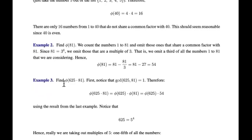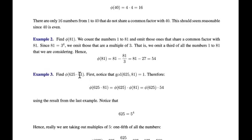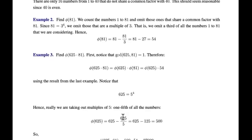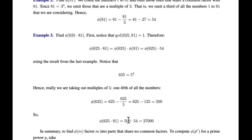Let's look at the Euler phi function of 625 times 81. We recognize that 625 = 5⁴ and 81 = 3⁴. These are relatively prime to each other, so by the Chinese Remainder Theorem splitting, we get φ(625 × 81) = φ(625) times φ(81). We already know φ(81) = 54. For φ(625): we take 625 numbers and remove everything that's a multiple of 5 — that's one fifth of the numbers. So 625 minus 125 = 500. Therefore φ(625 × 81) = 500 times 54 = 27,000.